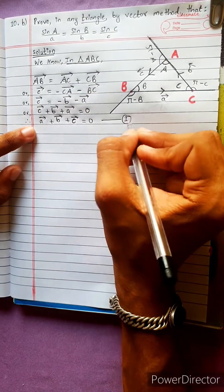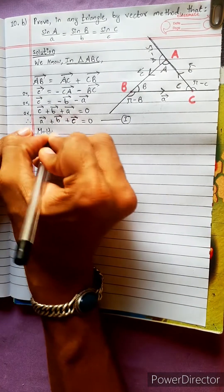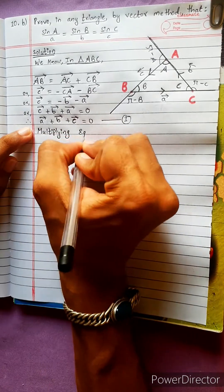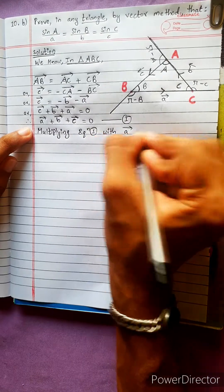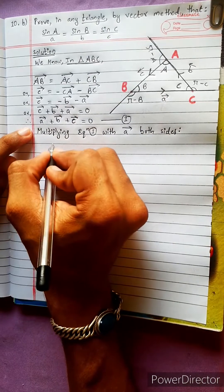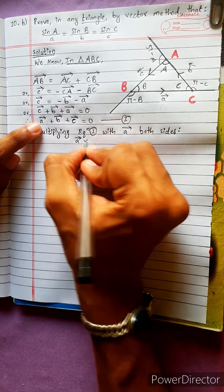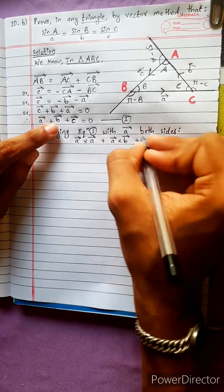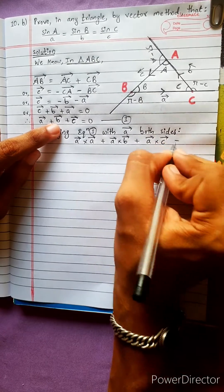Therefore a vector plus b vector plus c vector equals 0. This is equation 1. Now multiplying equation 1 with a vector on both sides.